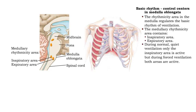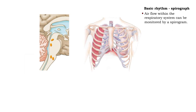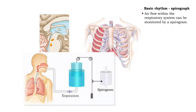During normal quiet ventilation, only the inspiratory area is active. But during forced ventilation, both areas are active. Airflow within the respiratory system can be monitored by a spirogram.